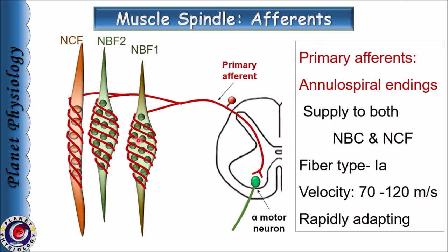The first type is primary afferents, also known as annulospiral endings. These are type 1a fibers with a conduction velocity of 70 to 120 meters per second. They innervate both nuclear bag as well as nuclear chain fibers and they are rapidly adapting fibers. Primary afferents are sensitive to the rate of change of muscle length during stretch — they detect rapid changes in the speed of movement, thus allowing quick corrective movements. This is called the dynamic response.